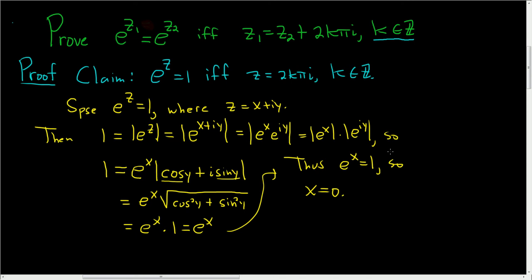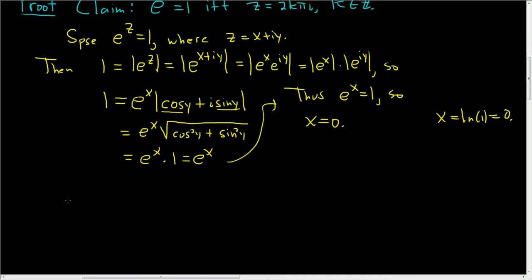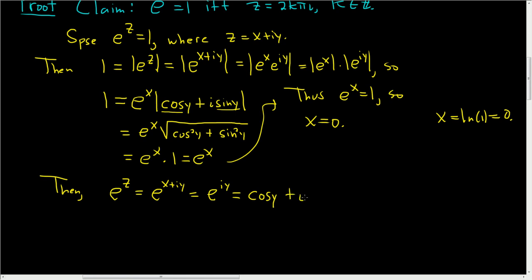That part should be pretty obvious. If it's not, you can use properties of logs: if e to the x is equal to 1, that means x is equal to the natural log of 1, which is equal to 0. So now let's look at e to the z again using the fact that x equals 0. So e to the z is equal to e to the x plus i·y. Since x was 0, this is e to the 0 plus i·y, so e to the i·y, and again using Euler's identity, this is cosine y plus i sine y.